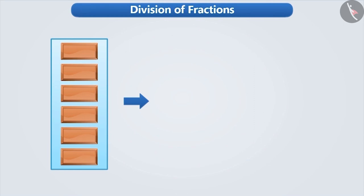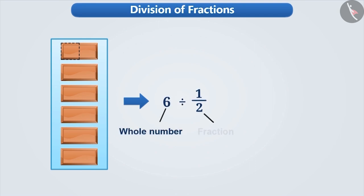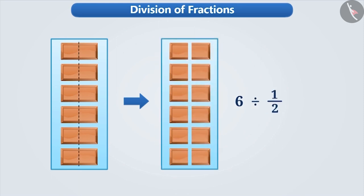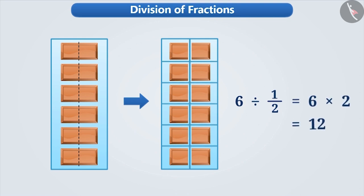Now using the same six chocolates, if you have to make a group of half chocolates, then how many groups will you be able to make? To find this, you must divide six by half. Here we have to divide a whole number by a fraction. To make a group of half chocolates, we have to divide each chocolate into two equal portions. Therefore, by making two equal portions of six chocolates, we get six into two, that is twelve parts. We can say that six divided by half is equal to six into two, which is equal to twelve.